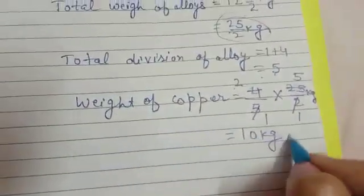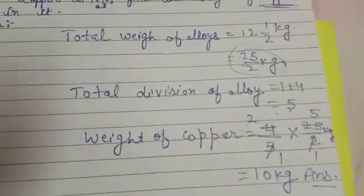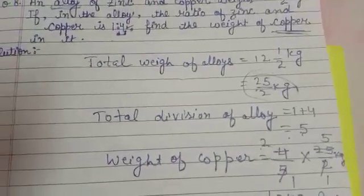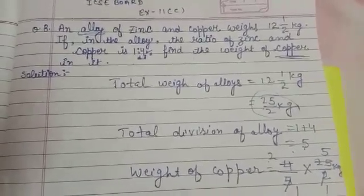Weight of copper is 10 kg, that is the required answer. Hope you understand the sum and you are capable to do these sums up to question number 8. We will meet in next video, thank you.